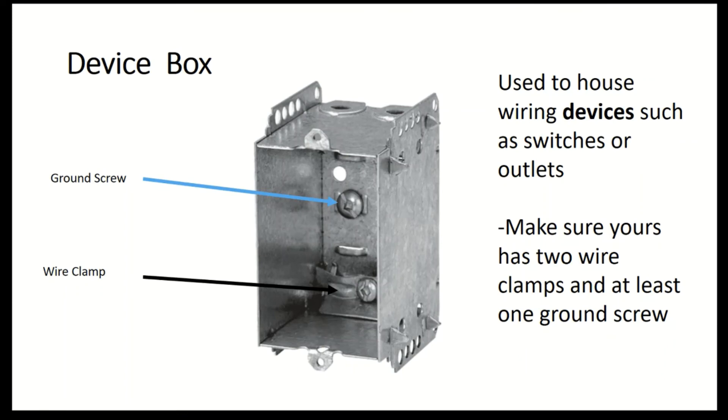Here's a closer look at your device box. As you can see there's some similar components to the octagon box. There's going to be two clamps and there's going to be two ground screws as well. The ground screws sit more in the middle of the box but just like the octagon box to maintain code rules we're going to have to attach your ground wire to the ground screw as well.